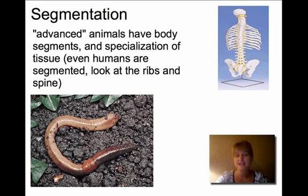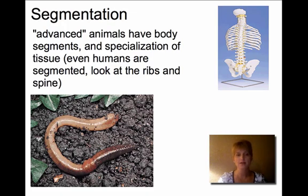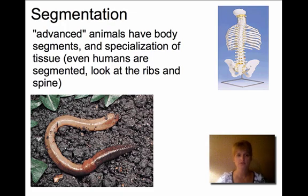Advanced animals have segmentation — their segments may look different, but they show a clearly segmented body. We see this with worms: in this earthworm picture you can obviously see the different segments on its body. But even humans are segmented — they have a head region, a thorax (basically the ribs), and then the lower extremities.